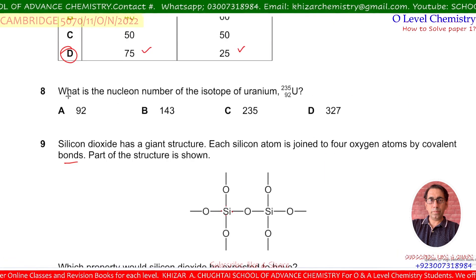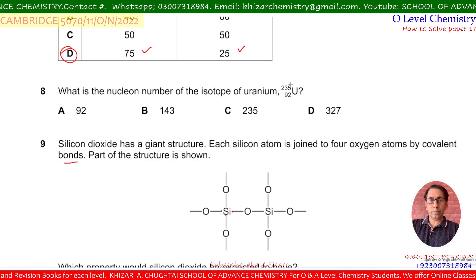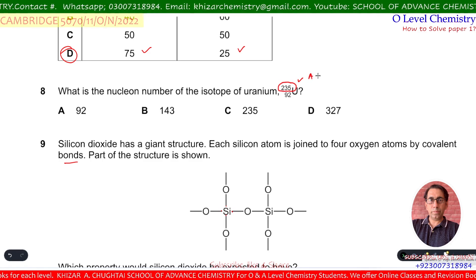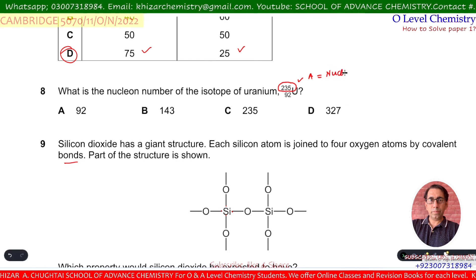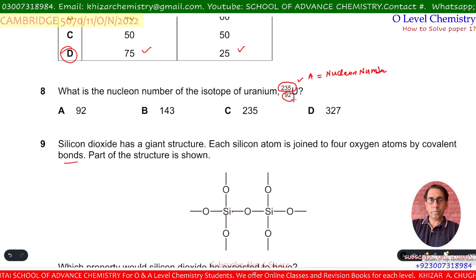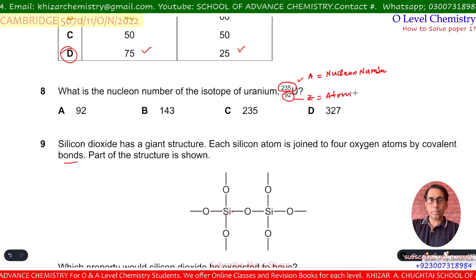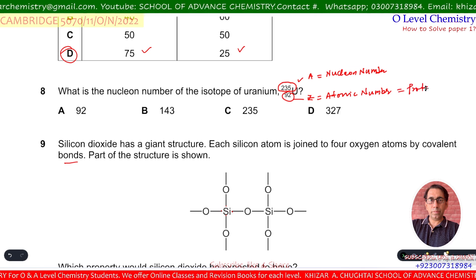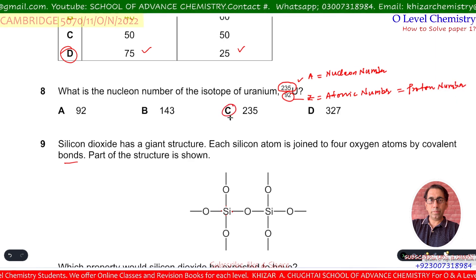Question number 8. What is the nucleon number of the isotope of uranium shown as 235 over 92? The larger number (235) is the nucleon number, also called the atomic mass. The smaller number (92) is the atomic number or proton number. So C is the correct option.